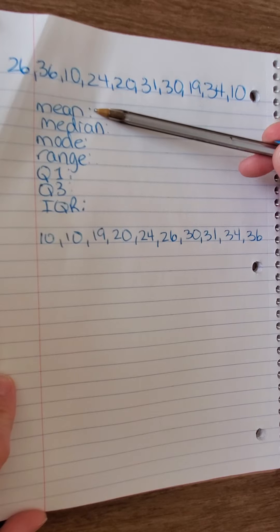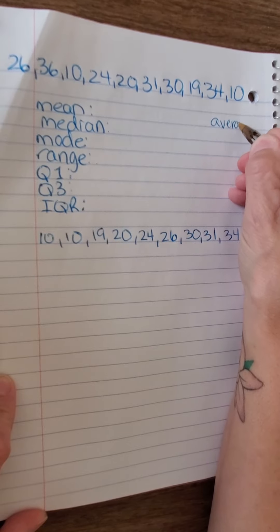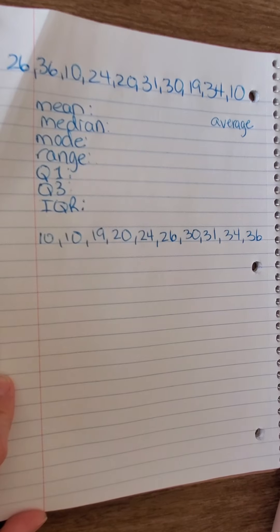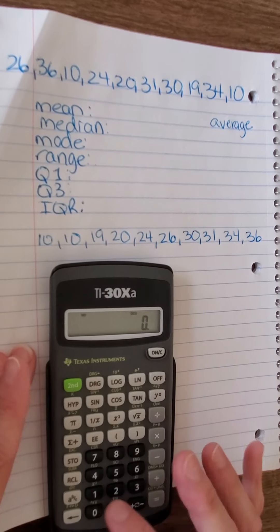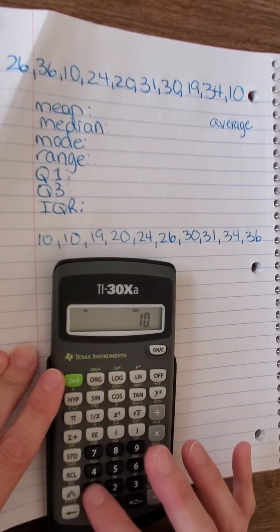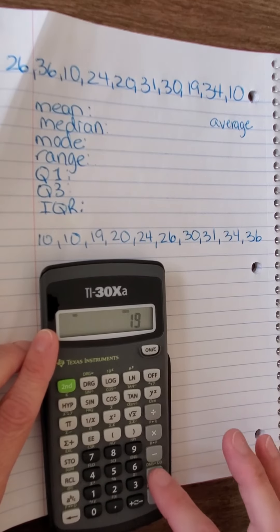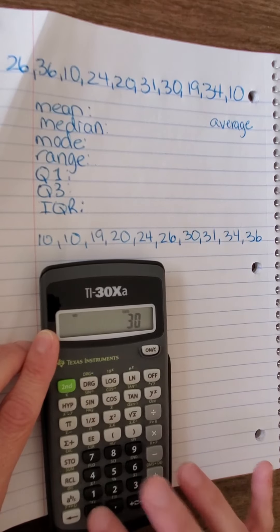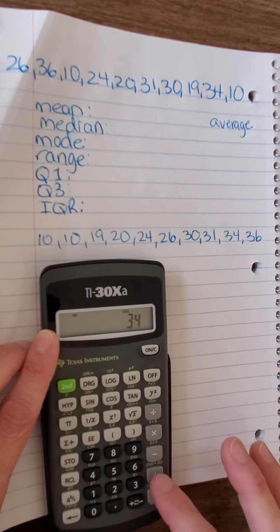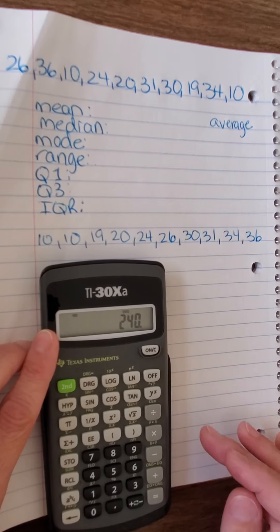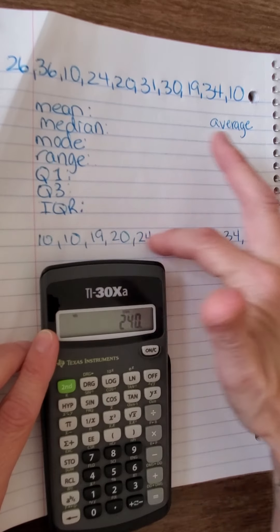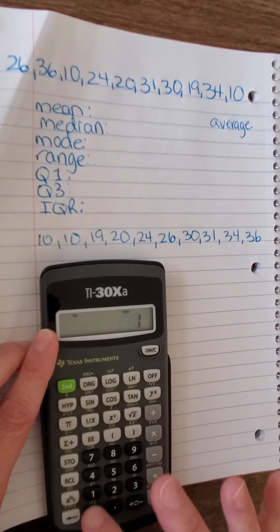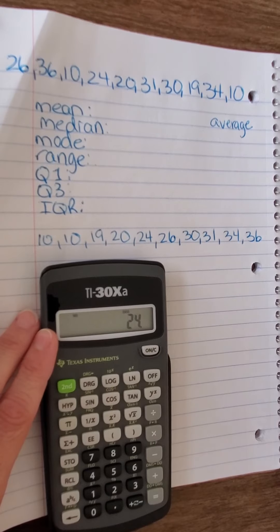First thing on my list is mean. Remember, the mean is the average of the numbers. We find the average by adding them all up and then dividing by the number of data in the set. So, I'm going to add all my numbers up. 10 plus 10 plus 19 plus 20 plus 24 plus 26 plus 30 plus 31 plus 34 plus 36. My total is 240. And now I will divide it by, remember we just counted, we have 10 numbers in our set. So, my average, my mean is 24.